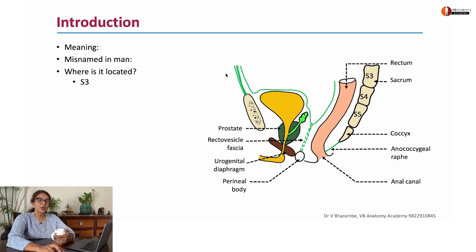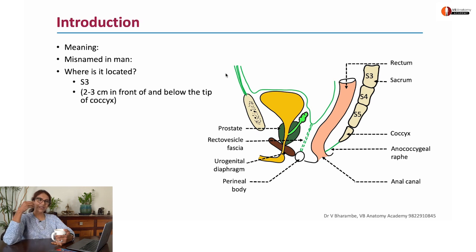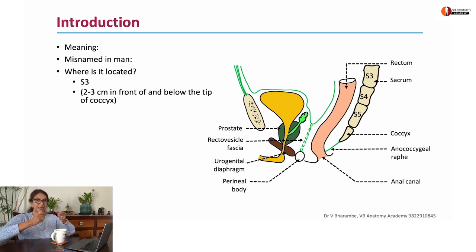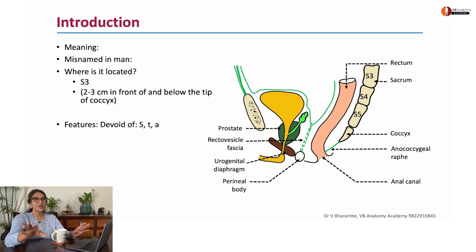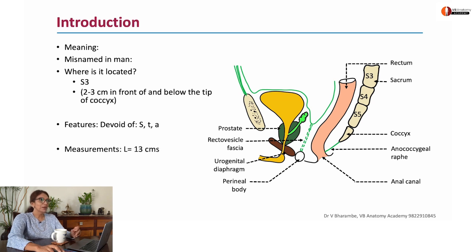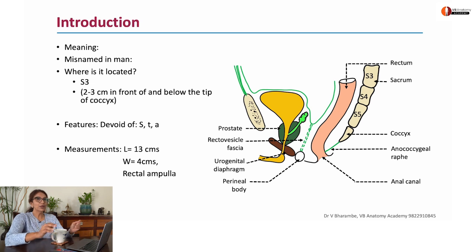The rectum is located from S3 and below to a point about two to three centimeters below and in front of the coccyx. It is devoid of taeniae coli, devoid of sacculations, and devoid of appendices epiploicae. It measures about 13 centimeters in length and 4 centimeters in width, and in the lower part it is slightly dilated to form a rectal ampulla.